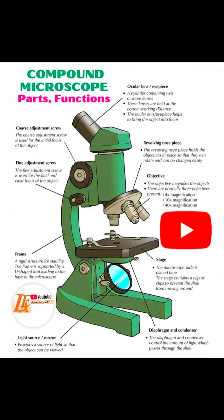We have another one which we call the condenser, which focuses light into the specimen. And then we have another one called the revolving nosepiece, which holds the objective lens and allows switching between them.